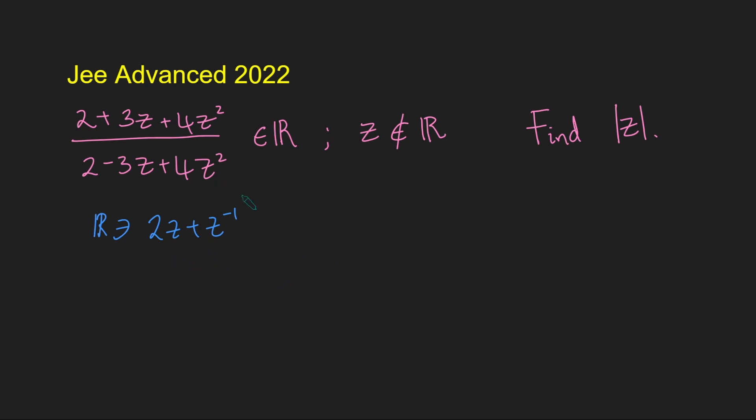And so that means that it's the same as its complex conjugate, which would be 2z bar plus z bar inverse. Now what I'm going to do is group these two terms together and bring them all to the left-hand side. So I get 2 times z minus z bar plus z inverse minus z bar inverse.